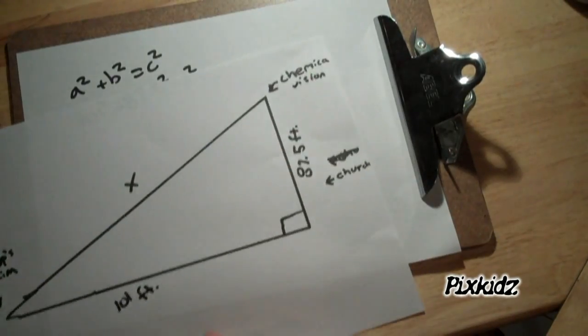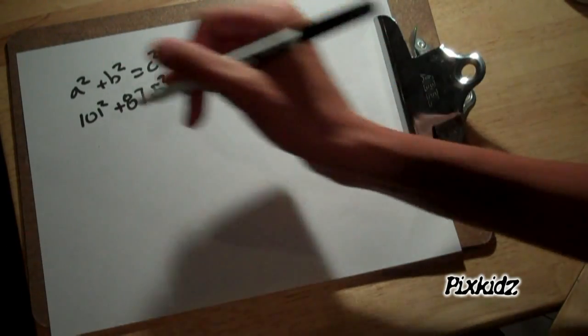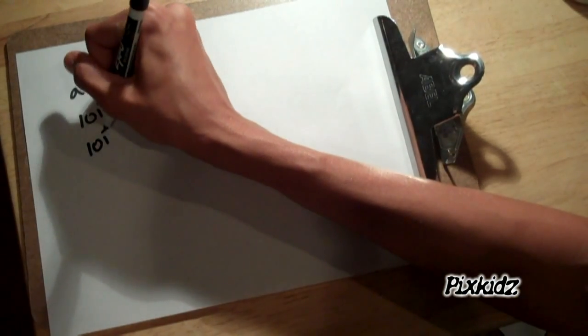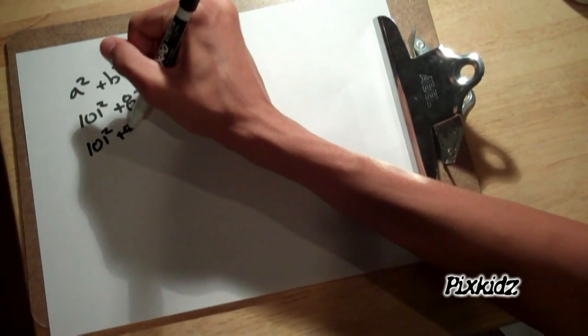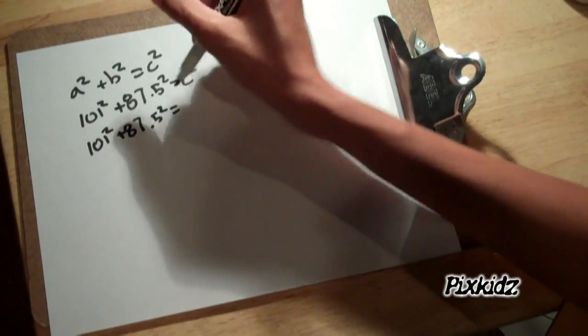The x is the hypotenuse and c squared is the hypotenuse. So the final equation becomes 101 squared plus 87.5 squared equals x squared.